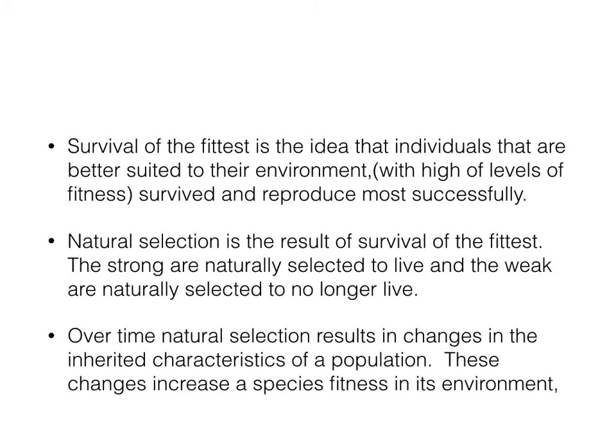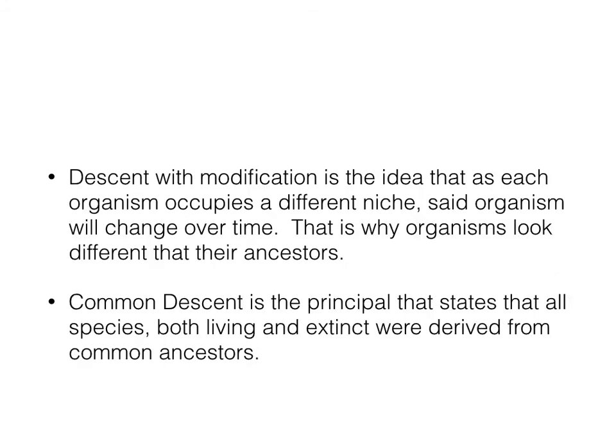Over time, natural selection results in changes in the inherited characteristics of a population. These changes increase a species' fitness in its environment. Descent with modification is the idea that as each organism occupies a different niche, said organism will change over time — this is why organisms look different from their ancestors. Common descent is the principle that states that all living species, both living and extinct, derive from common ancestors.